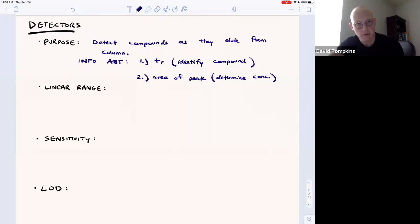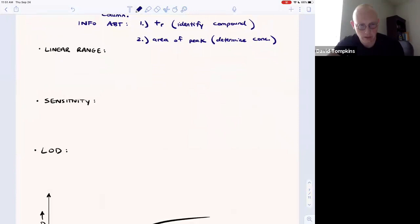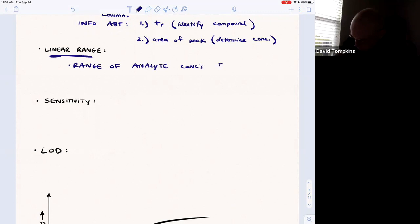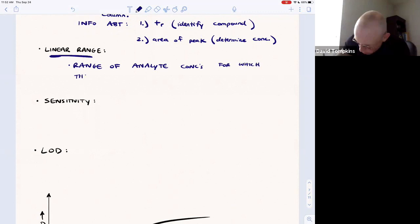There are some different qualities that we look for in analyzing or deciding what sort of detector is optimal. So the linear range, this is the range of concentration values or analyte concentrations for which peak area is linearly proportional to the solute's concentration.